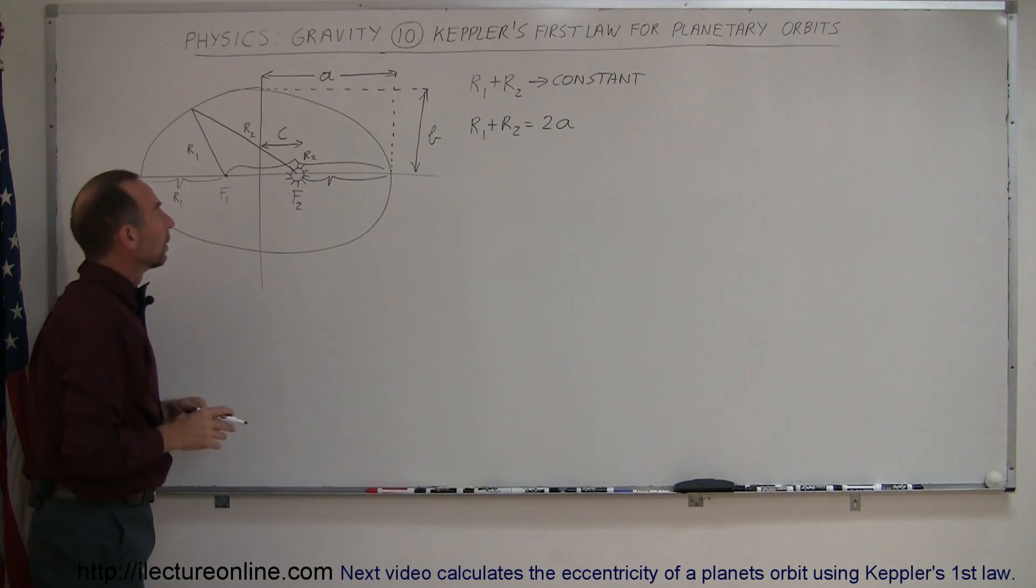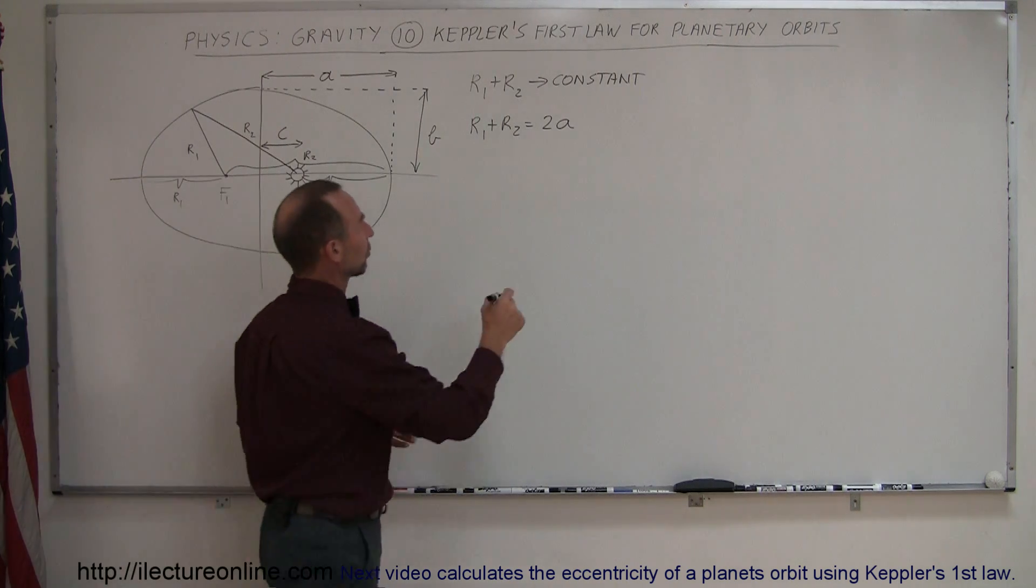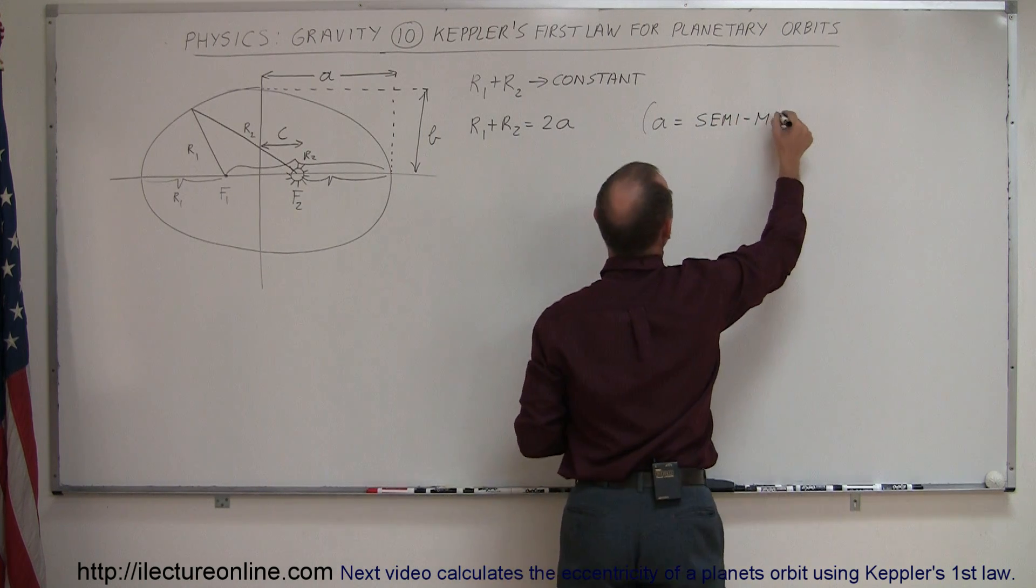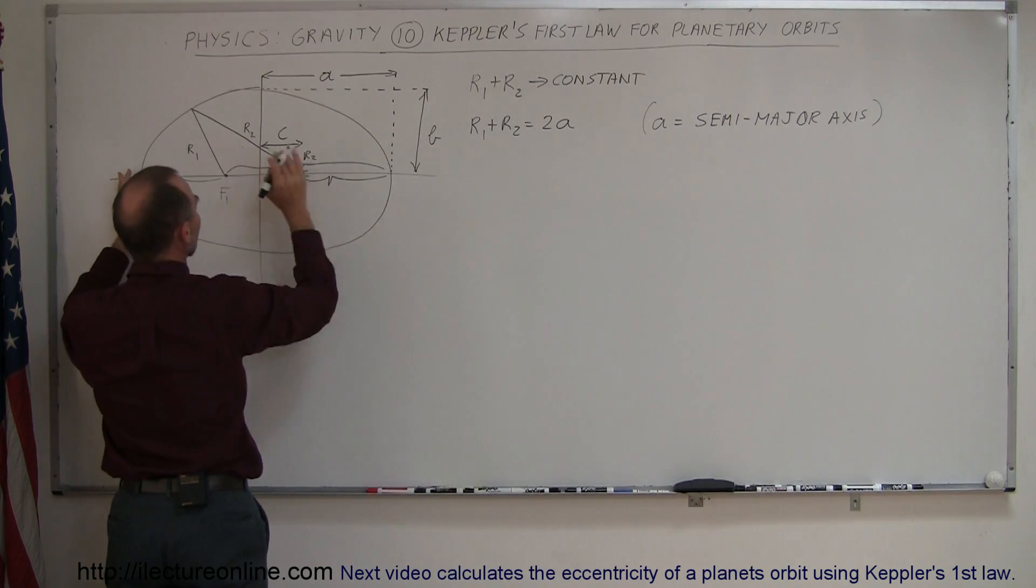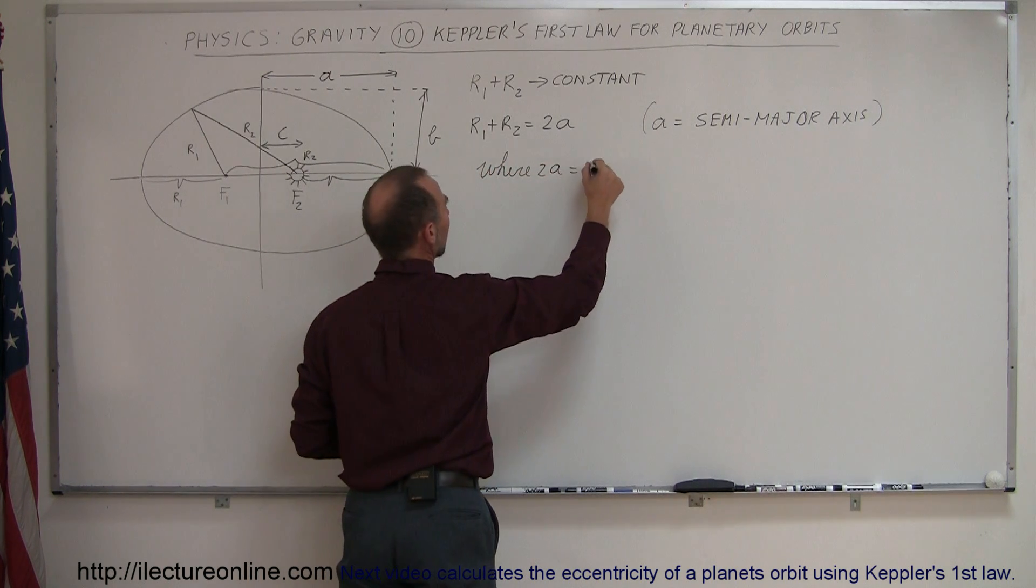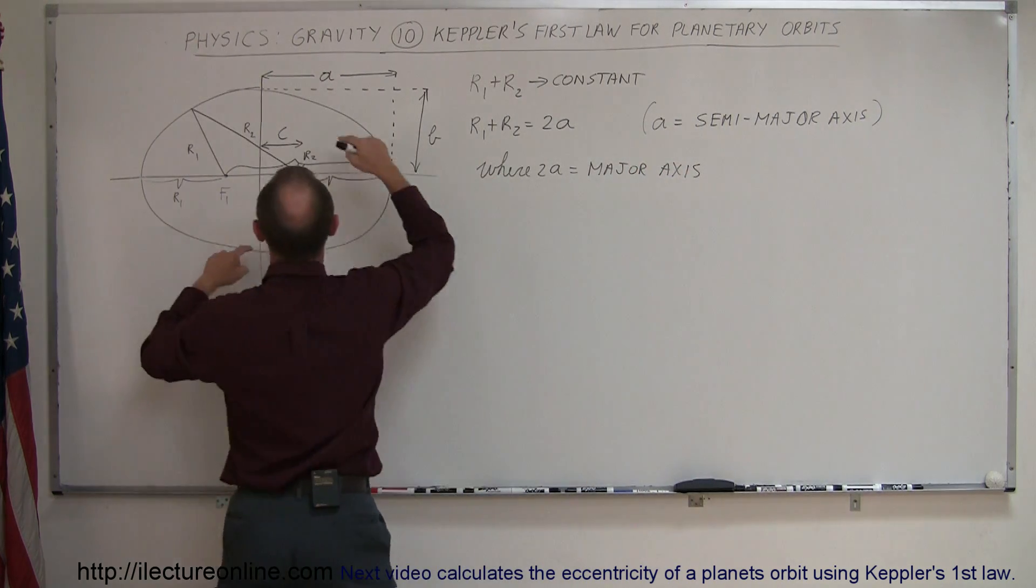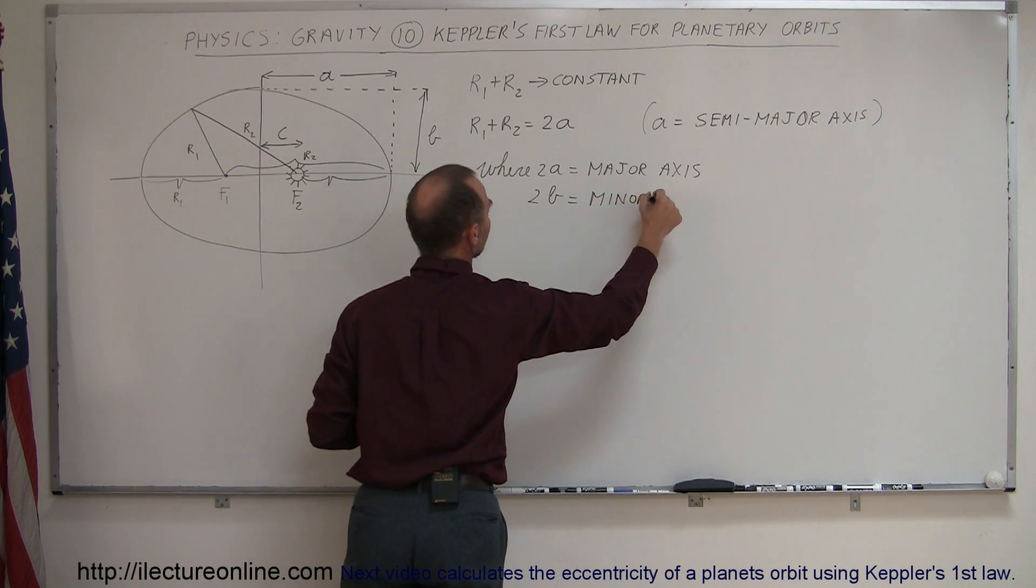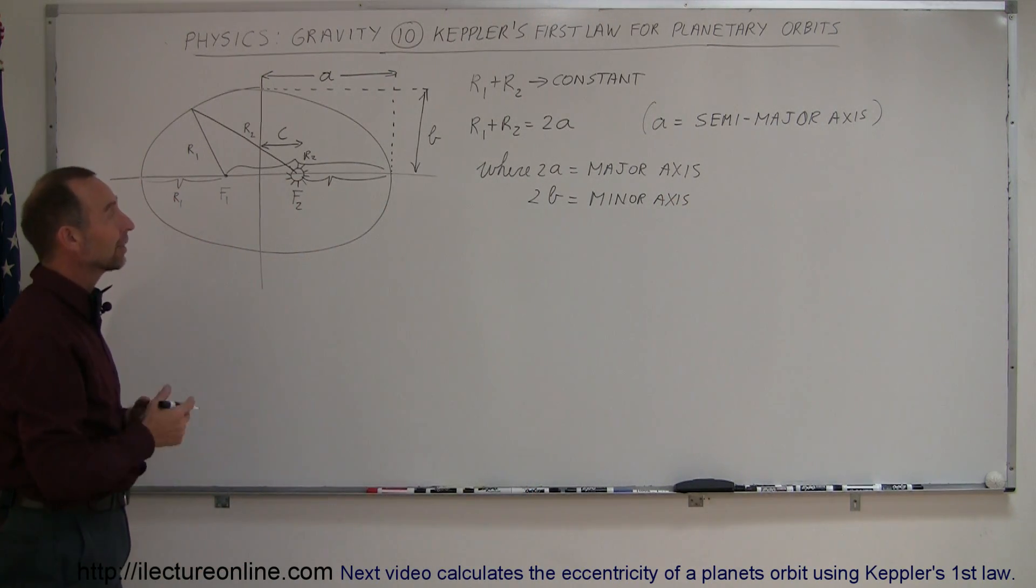Now, what is A? Well, this A is called the semi-major axis, where A is equal to the semi-major axis. Semi means one-half, and the major axis is this distance right here. So, the distance all the way from there to there is considered 2A. That's the major axis, where 2A is equal to the major axis, and then 2B would be equal to the distance of the minor axis. And of course, then A is the semi-major axis, and B would be the semi-minor axis.